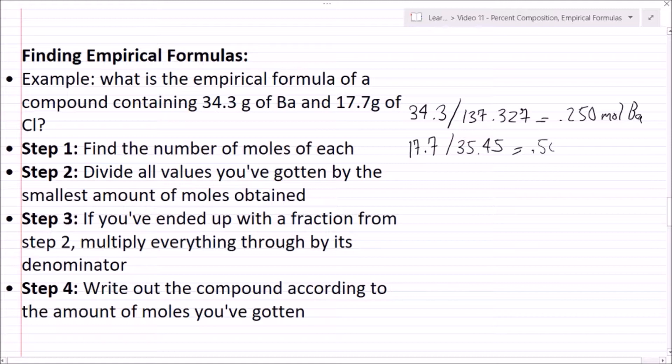Now second is we're going to want to divide all values I've gotten by the smallest amount of moles obtained. So our smallest amount here is 0.250, so let's divide both this number and this number by 0.250. So 0.250 over 0.250 equals 1. 0.500 over 0.250 equals 2.